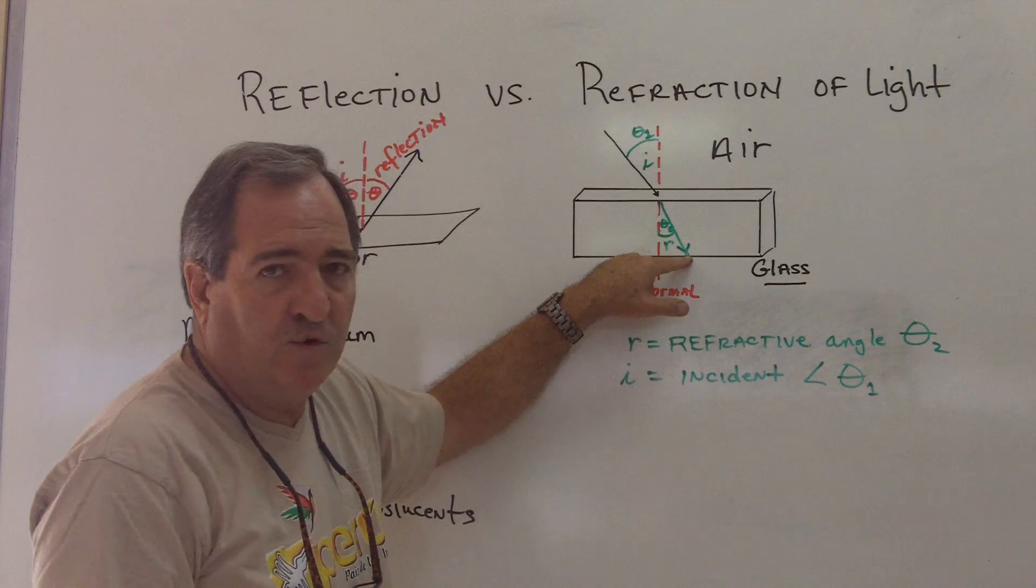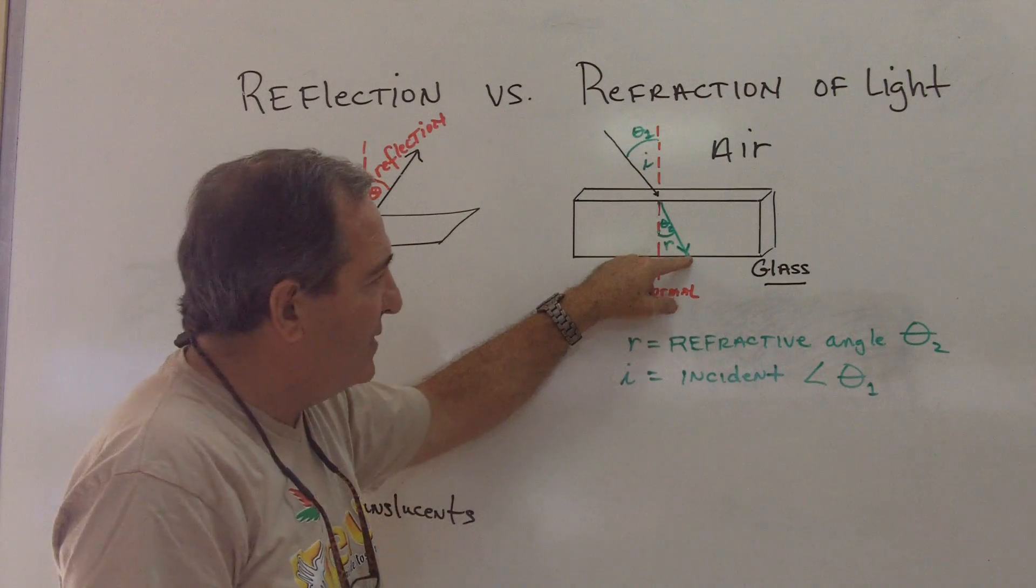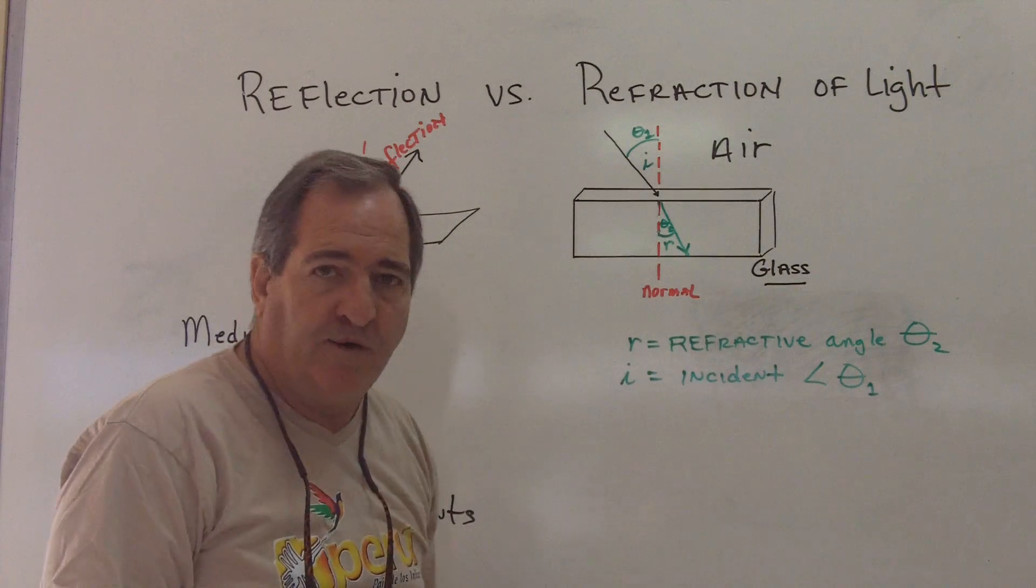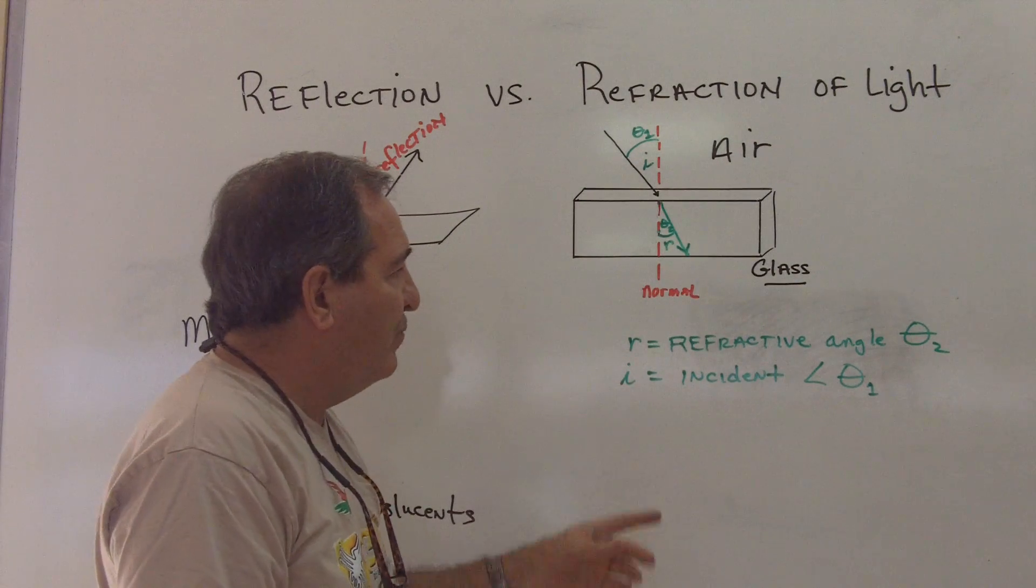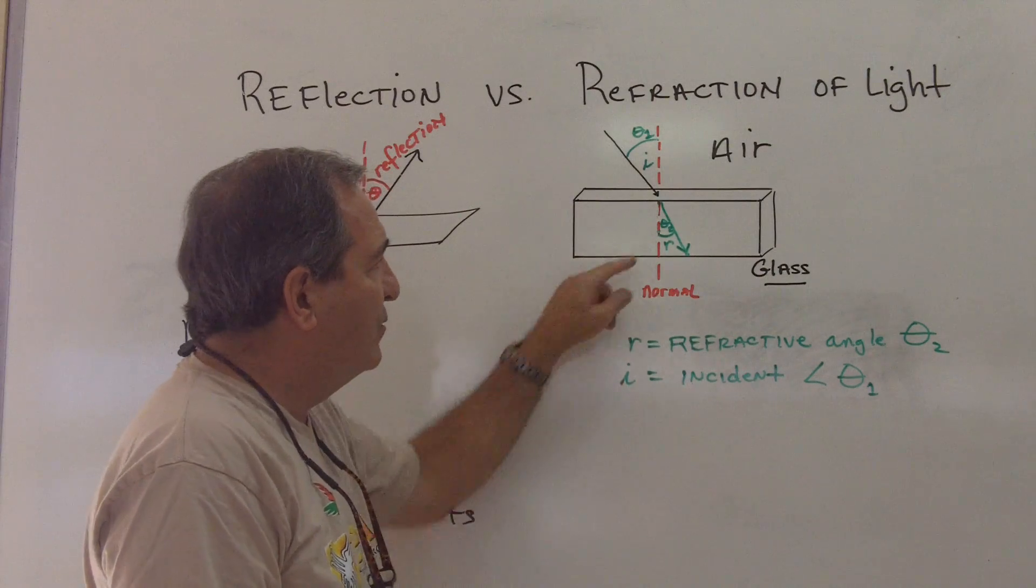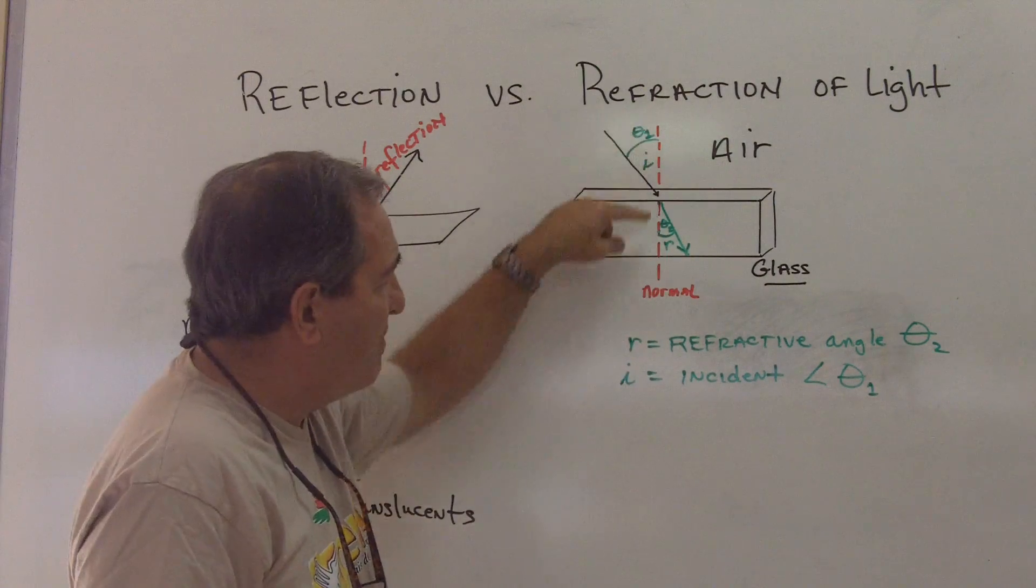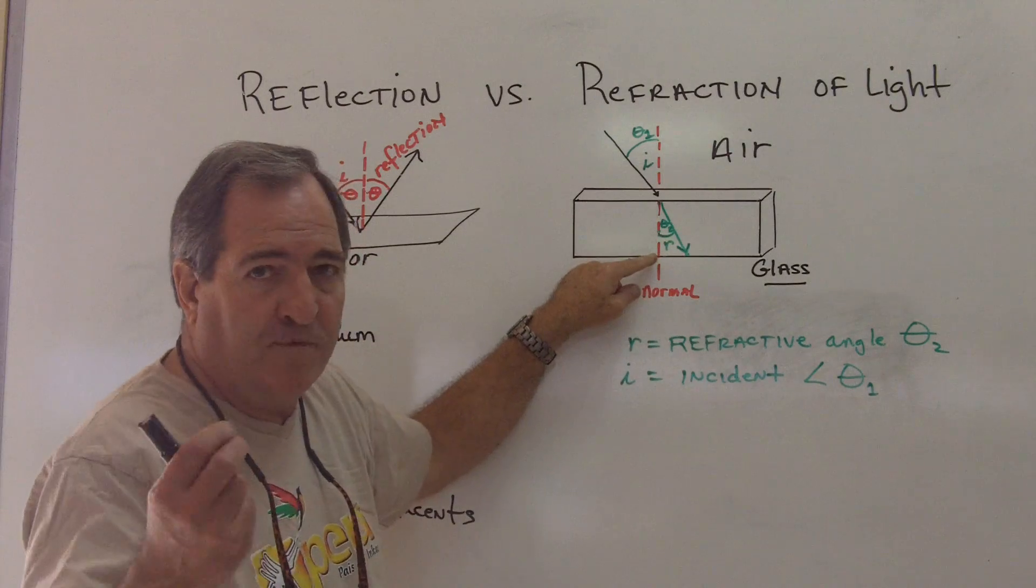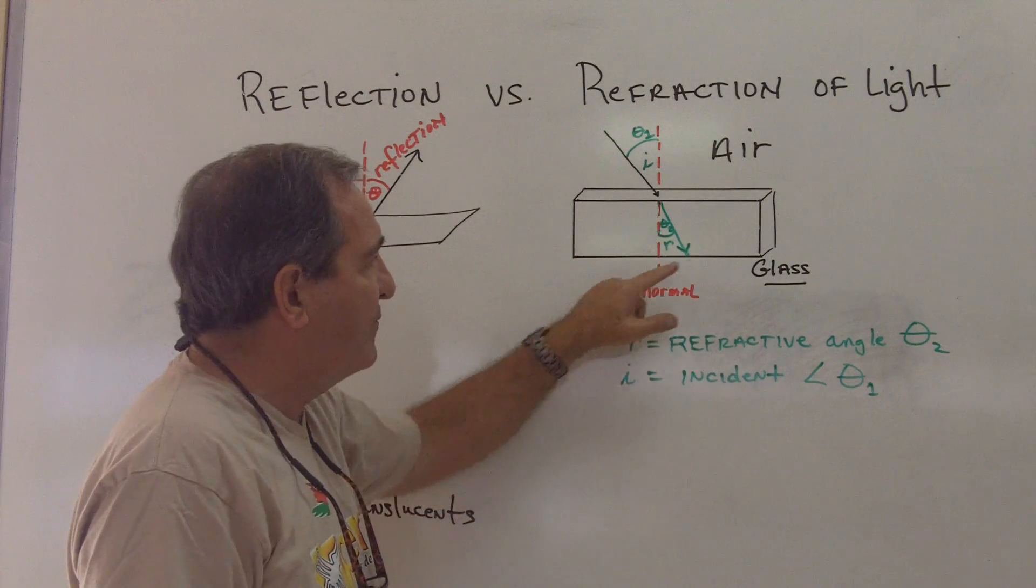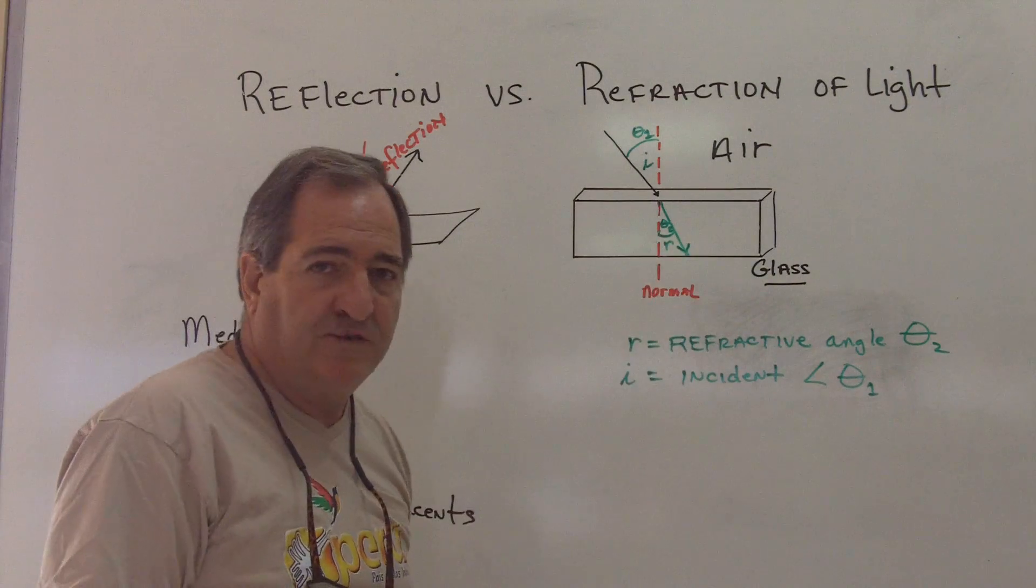Now it strikes the other end where the glass terminates and then it exits, which we're going to talk about in the next video. So we have a refracted angle, which is this little r, and that's how much it's bent from the normal. From the normal. Not from the parallel of the surface.